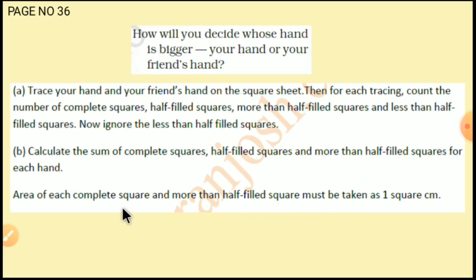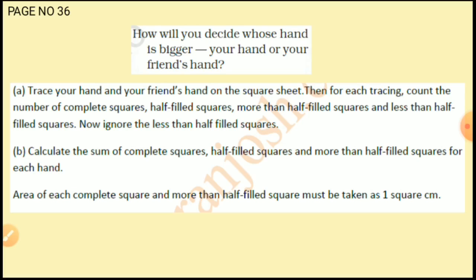तो जो complete square है या जो half से ज्यादा filled square है, उसका area एक square centimeter लेना है। जो exactly half filled है, उसका half लेना है। और जो less than half filled है, उसको ignore कर देना है। इस तरीके से squares को count करना है।